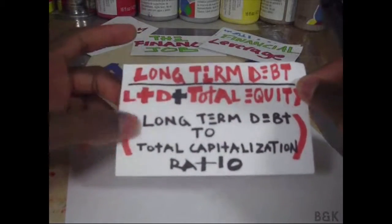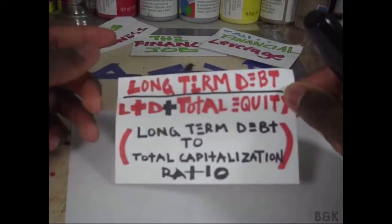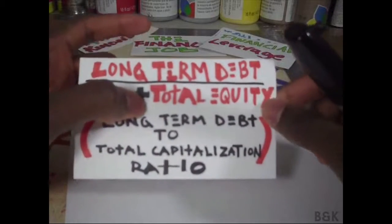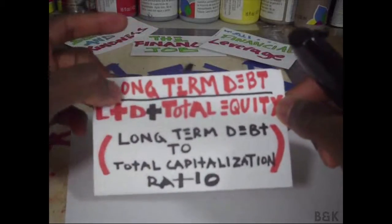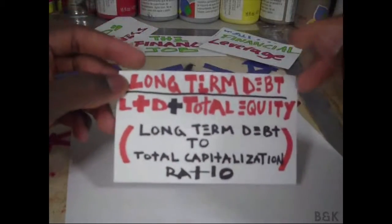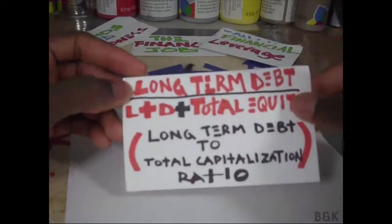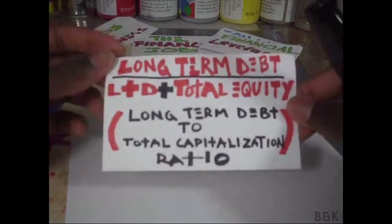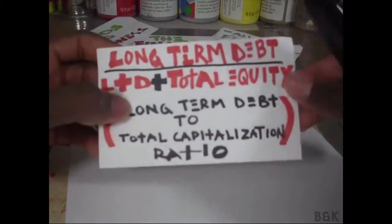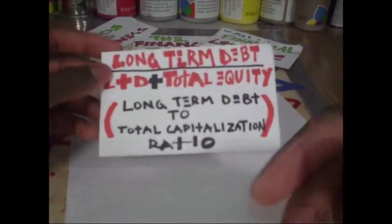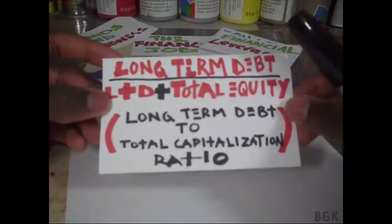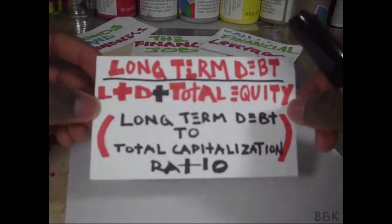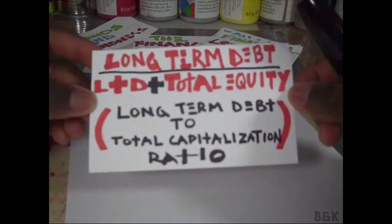If you look at this intuitively, what is it really asking? You're concerned with all the money the company owns and all the money it owes after a year. Why are we adding long-term debt again to the denominator? It's just one of those strange things — strange to me, at least.